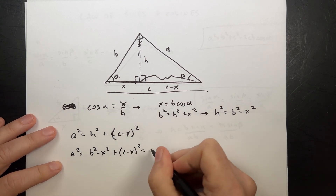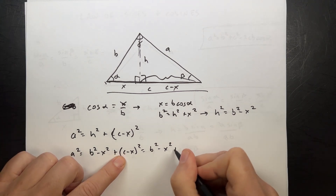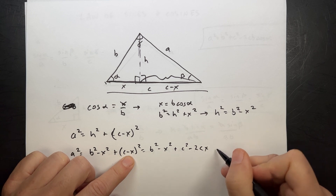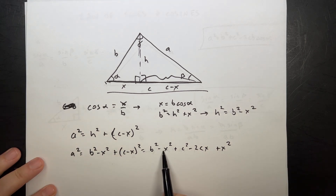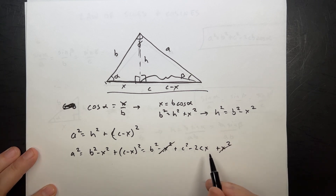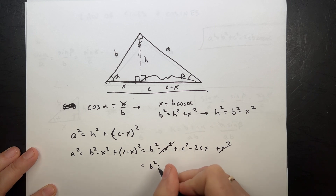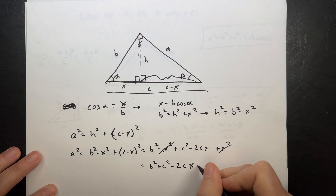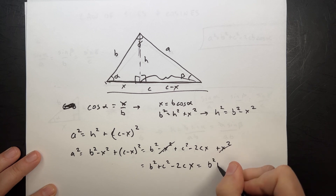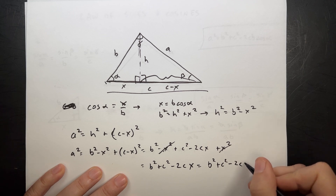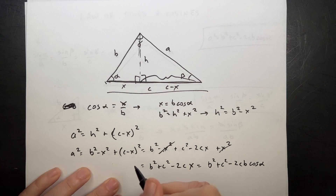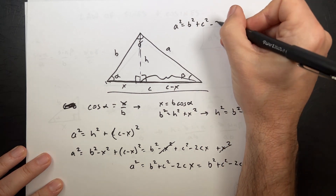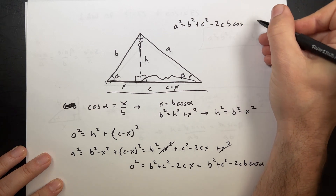So now I have another Pythagorean theorem. From the first one, h squared equals b squared minus x squared. If I plug that in, I get a squared equals b squared minus x squared plus quantity c minus x squared. Multiplying that out: b squared minus x squared plus c squared minus 2cx plus x squared. The minus x squared and plus x squared cancel, so I get b squared plus c squared minus 2cx. Substituting x equals b cosine alpha, I arrive at a squared equals b squared plus c squared minus 2cb cosine alpha.